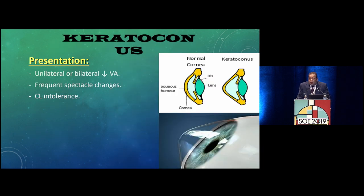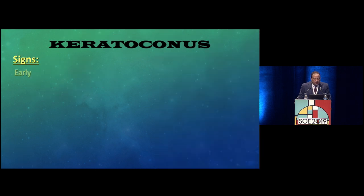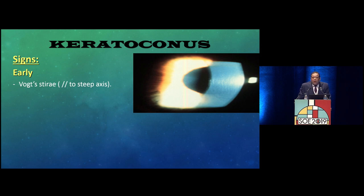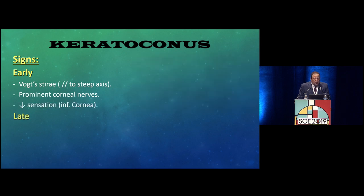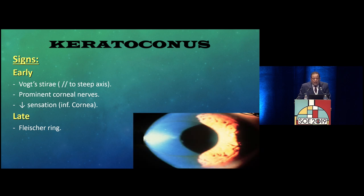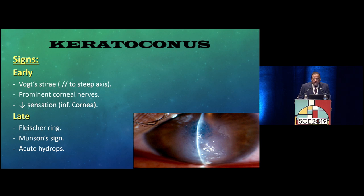Patients with keratoconus typically present with vision deterioration in one or both eyes, frequent spectacle changes, and dissatisfaction with spectacle vision. There is also contact lens intolerance. Clinical signs include Vogt's striae along the steep axis, prominent corneal nerves, decreased sensation in the inferior cornea, Fleischer ring (iron deposition on the epithelium), Munson's sign, and in late stages, acute hydrops where Descemet's membrane ruptures, introducing aqueous into the cornea causing corneal edema.